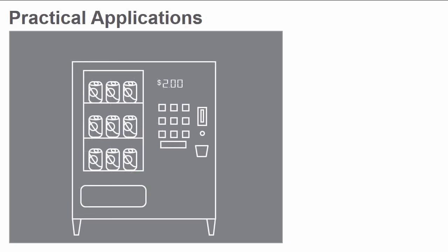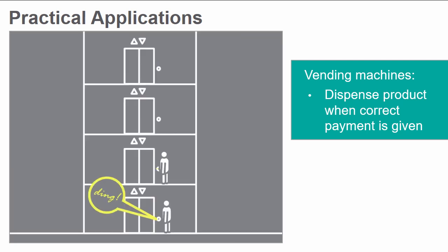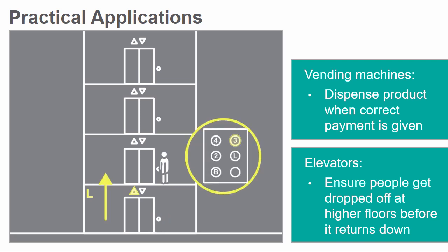Finite state machines have a variety of other uses. They are used in vending machines to dispense products when the appropriate amount of money is deposited. They are also used in elevators to ensure people are dropped off on the top floors before the elevator comes back down.